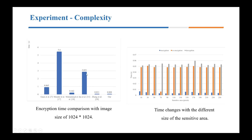This slide shows the time cost of our scheme. The picture on the left shows our time cost compared to other works — our time overhead is the lowest, about 8 ms. The picture on the right shows how time changes with different sizes of the sensitive area. As can be seen from the figure, the encryption time of our scheme is relatively stable and doesn't change much.